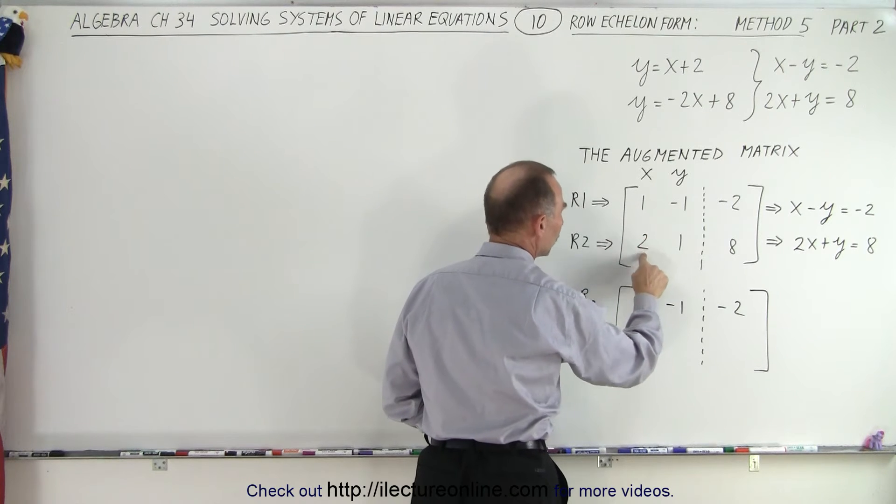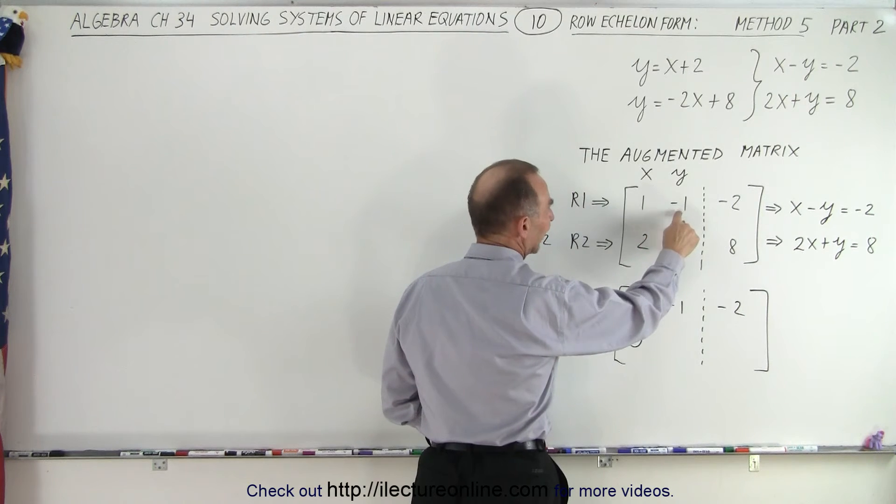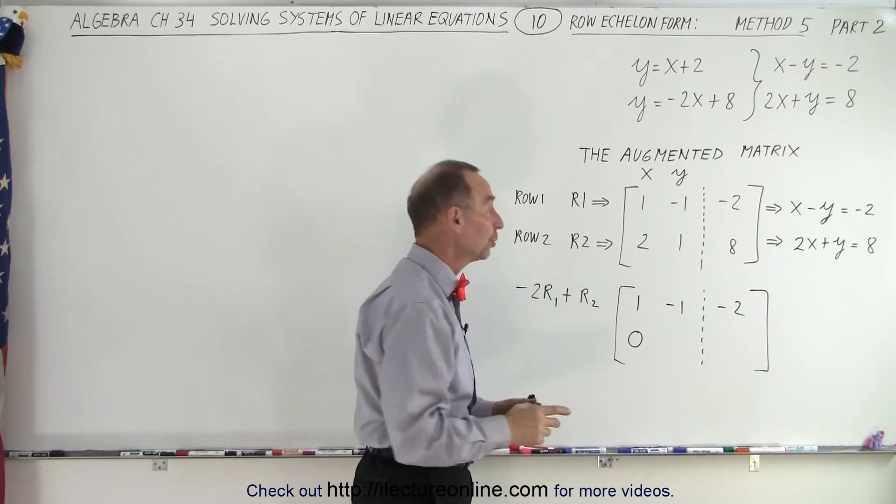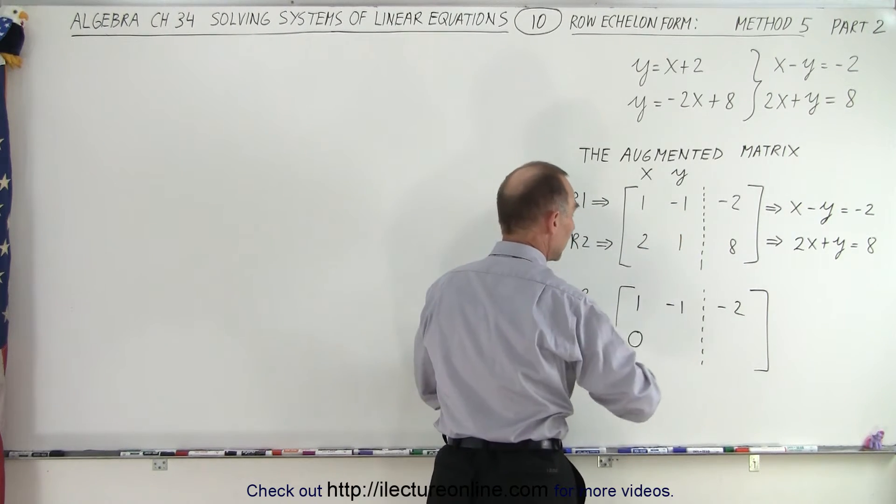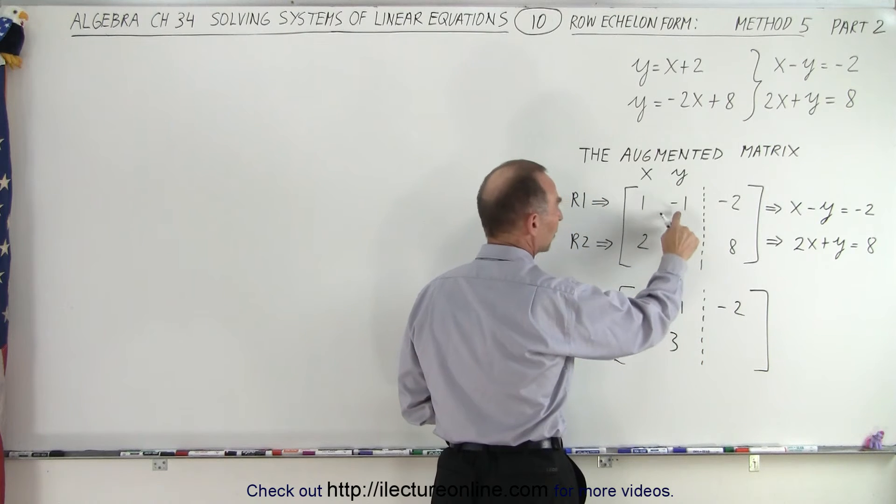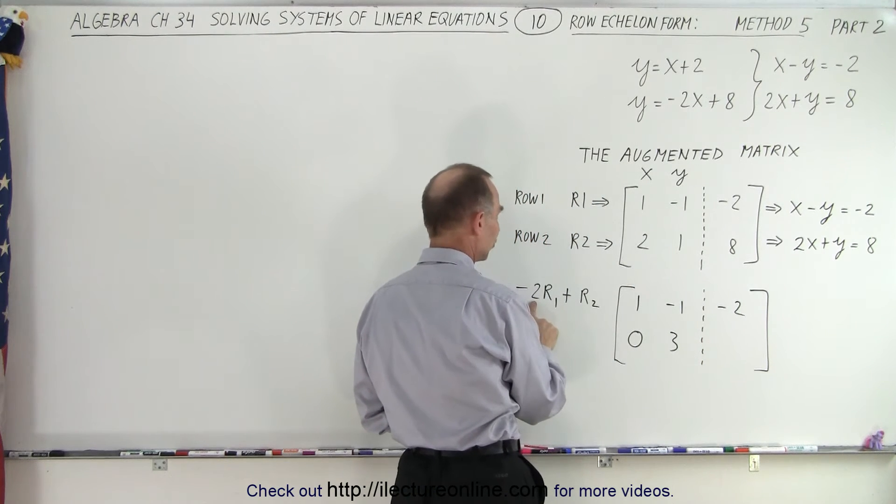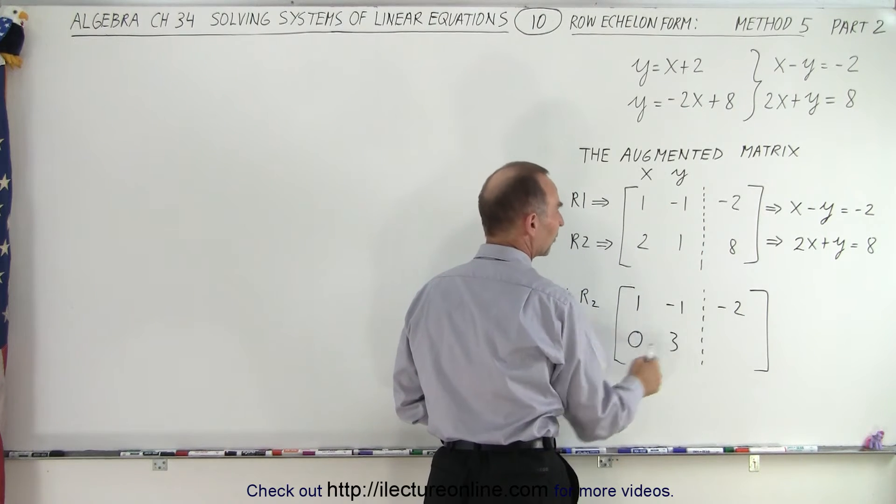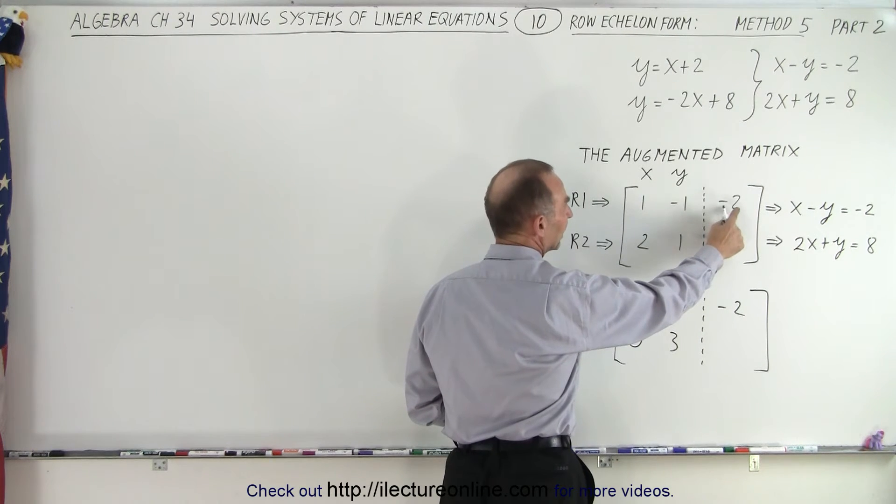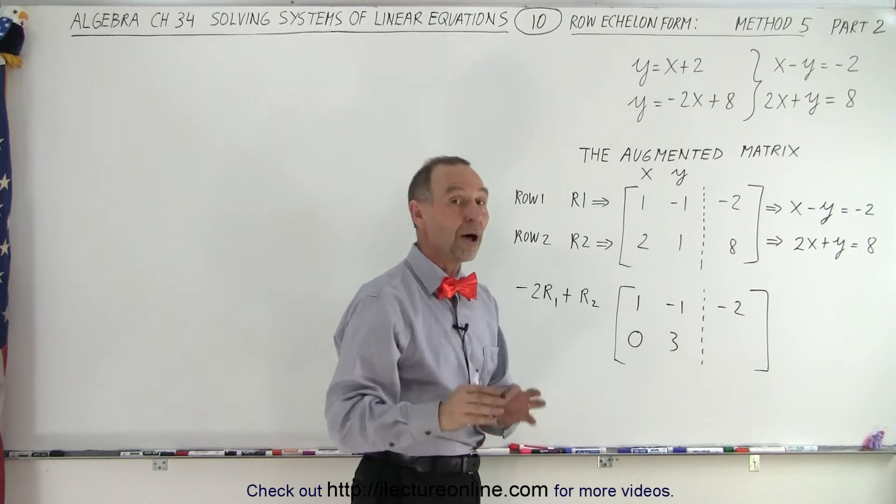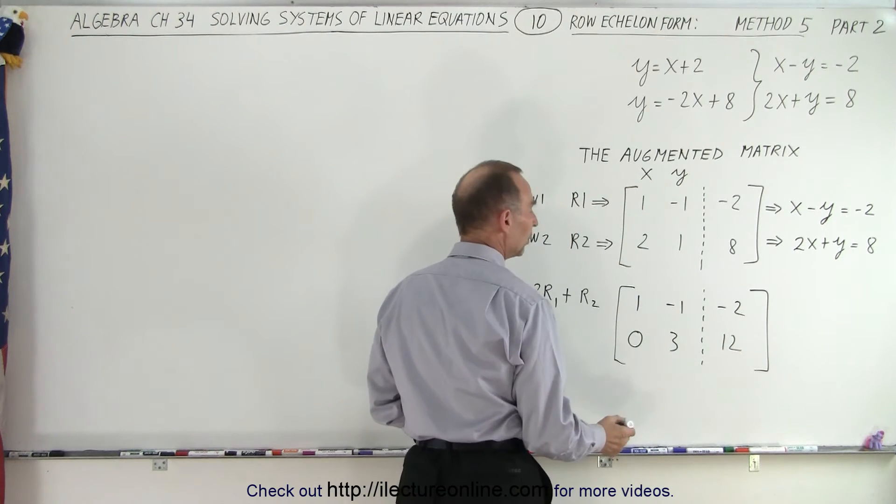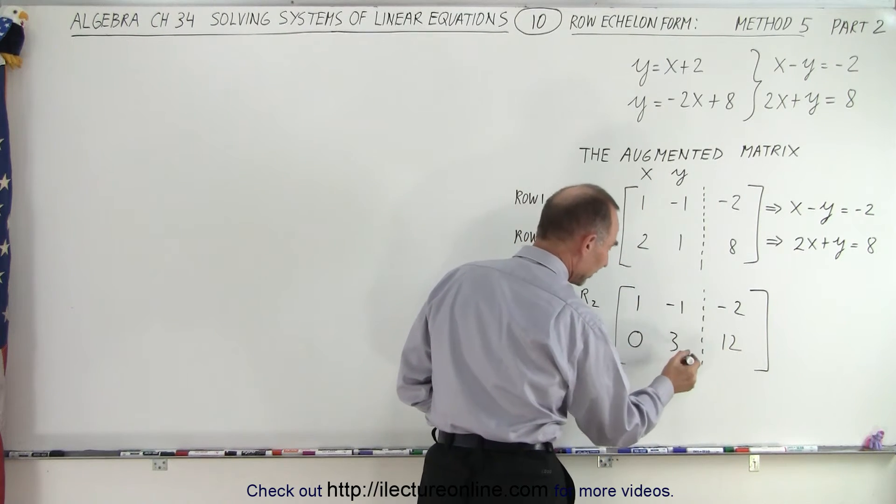Now -2 times -1 is a positive 2 added to 1 gives me a positive 3. So I multiply -1 times the -2: -2 times -1 is positive 2 plus 1 is positive 3. And here I'm multiplying the -2 times the -2: -2 times -2 is positive 4 added to 8, I get 12.